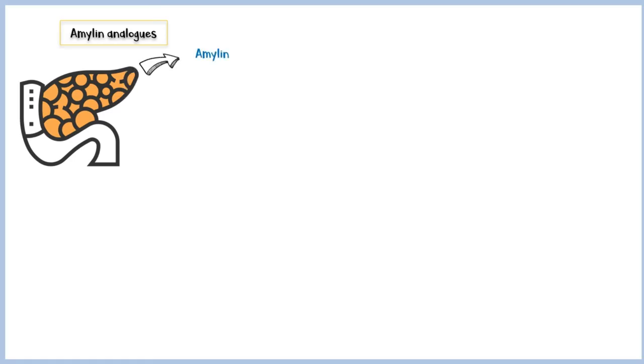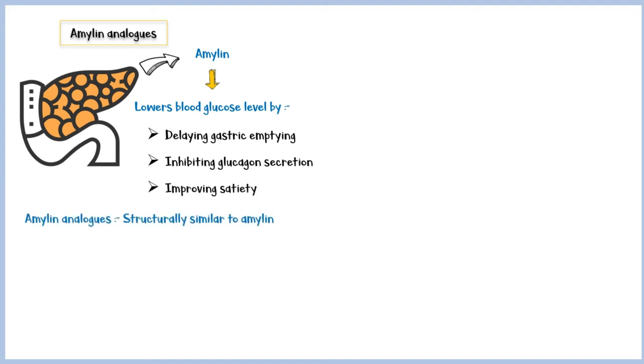Next we have amylin analogs. Amylin is a peptide hormone secreted alongside insulin by the pancreas. Amylin lowers blood glucose level by delaying gastric emptying, inhibiting glucagon secretion, and improving satiety. Amylin analogs are structurally similar to amylin and have the same effects on carbohydrate metabolism. Pramlintide is the main drug in this class.